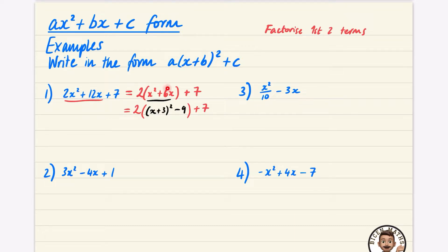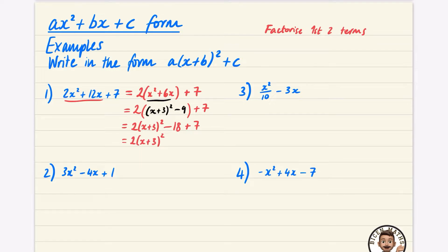Now that I've completed the square on the factorised part, I can expand the brackets carefully and simplify. When I expand, it's going to be 2(x + 3)², and then 2 times −9, which is −18. Because we never factorised the plus 7, it doesn't need to be multiplied by 2, so we just have 2(x + 3)² − 18 + 7, which is 2(x + 3)² − 11.